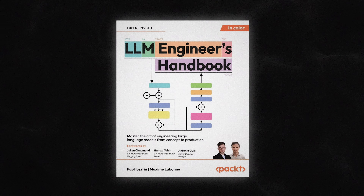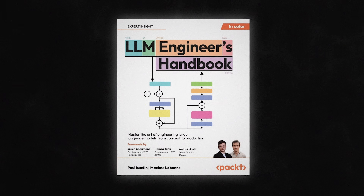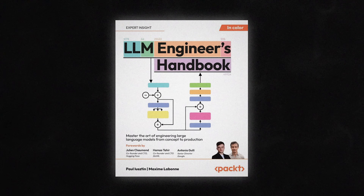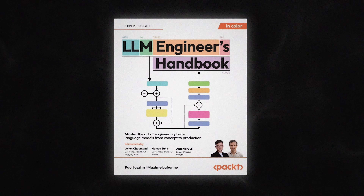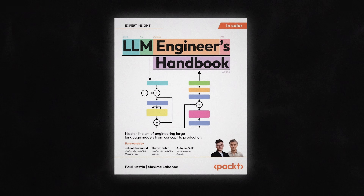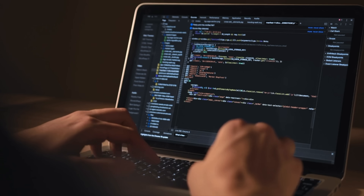The next book is LLM Engineer's Handbook: Master the Art of Engineering Large Language Models from Concept to Production by Paul Iusztin and Maxime Labonne. Unlike the other two books, this book is geared towards engineers who want to build, optimize, and successfully deploy their own LLM-based applications. So if you're more technically inclined and looking for a more hands-on guide, this is a great resource.